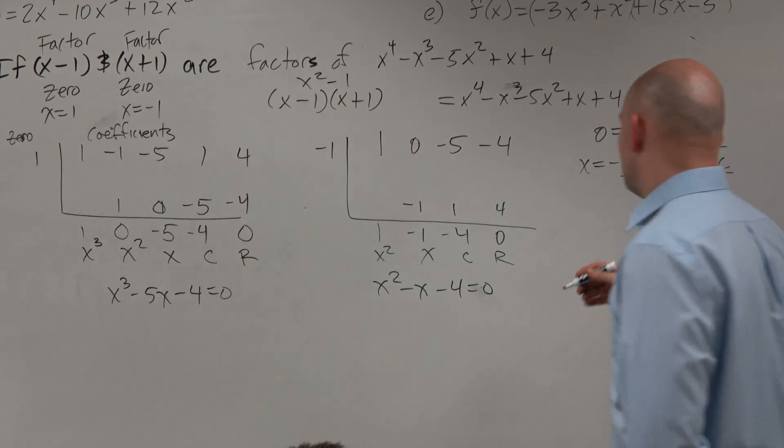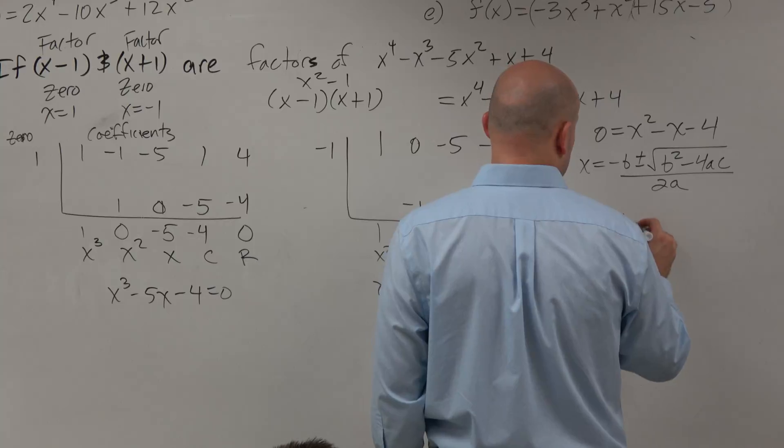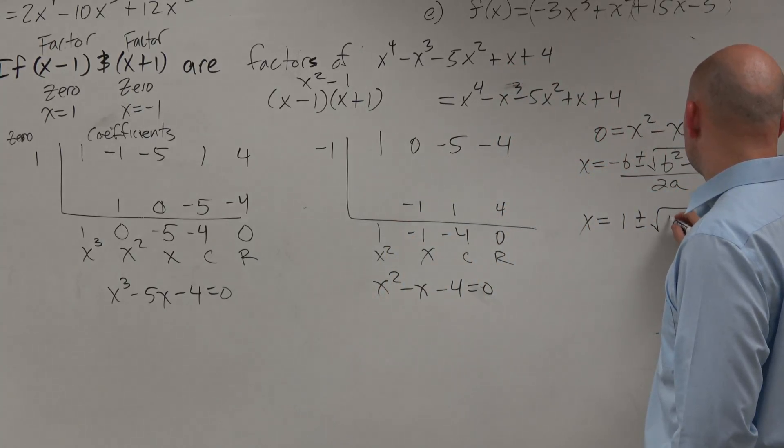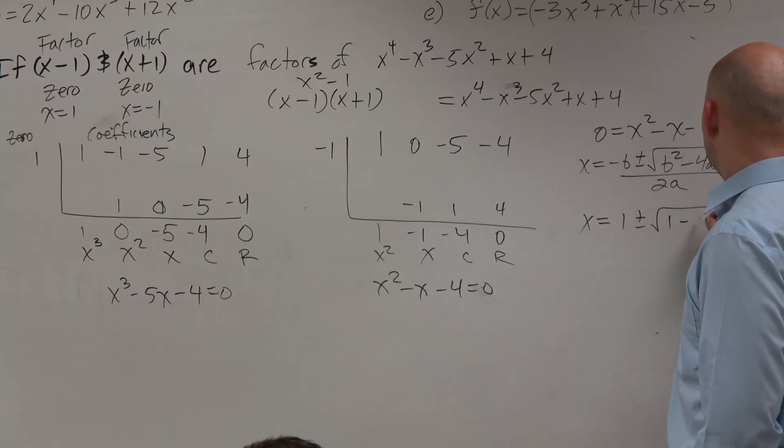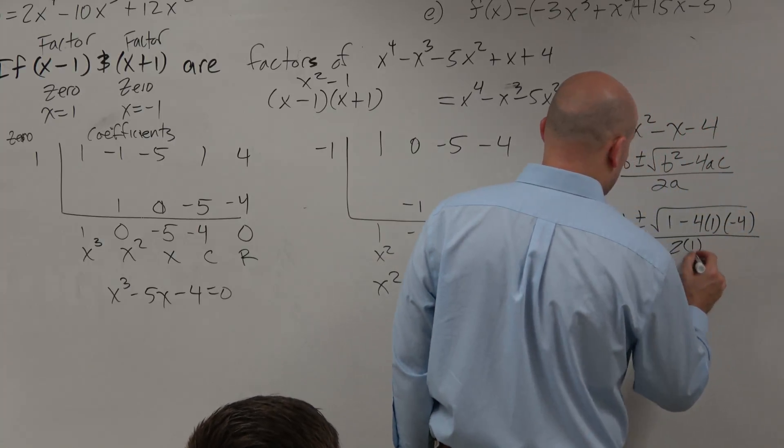So let's just plug in the values. Opposite of b is going to be a positive 1 plus or minus square root of b squared, which is 1 minus 4 times 1 times negative 4 all over 2 times 1.